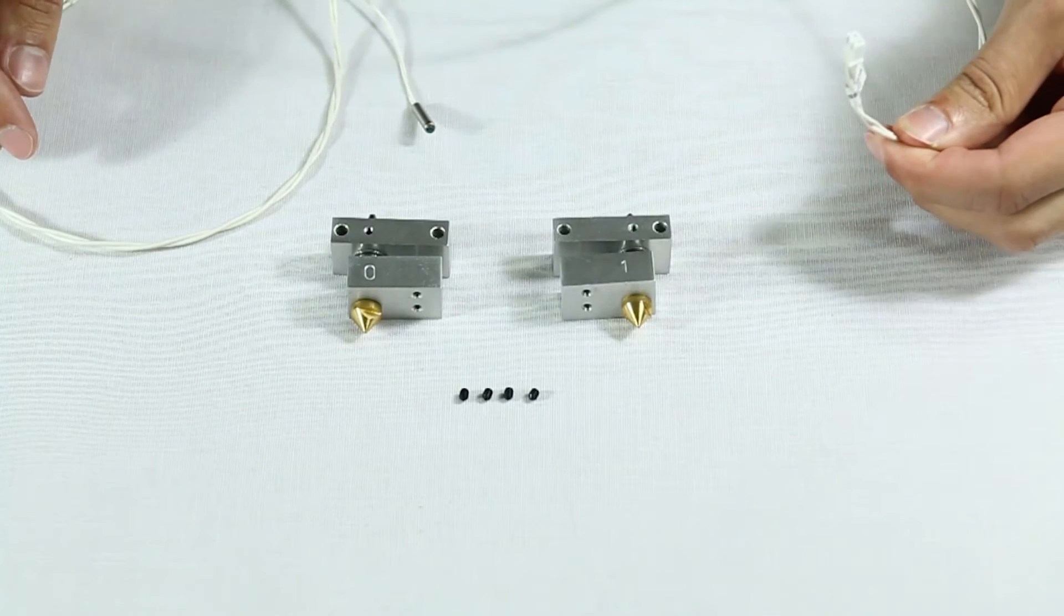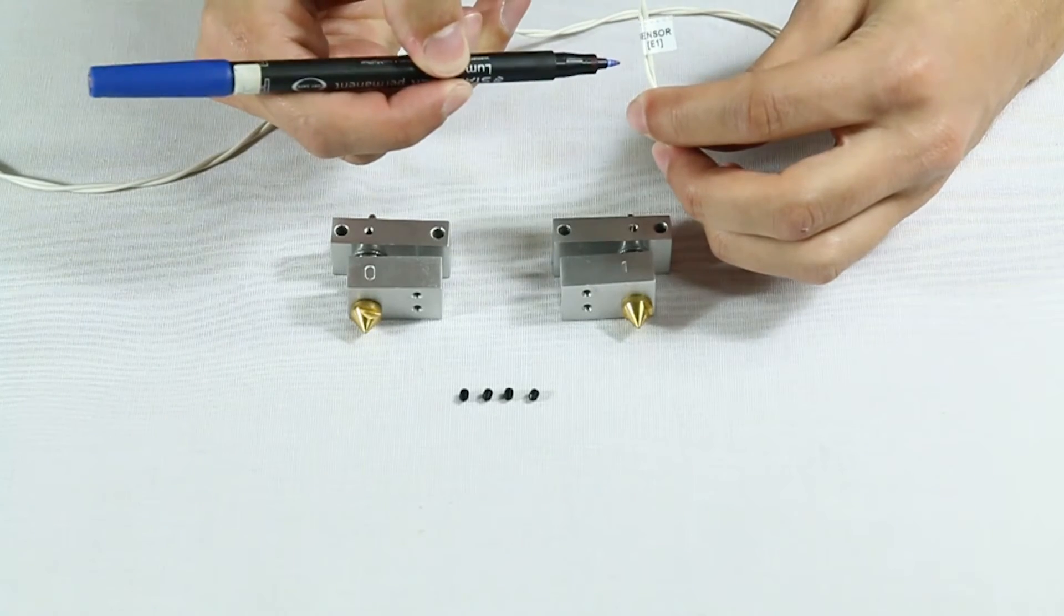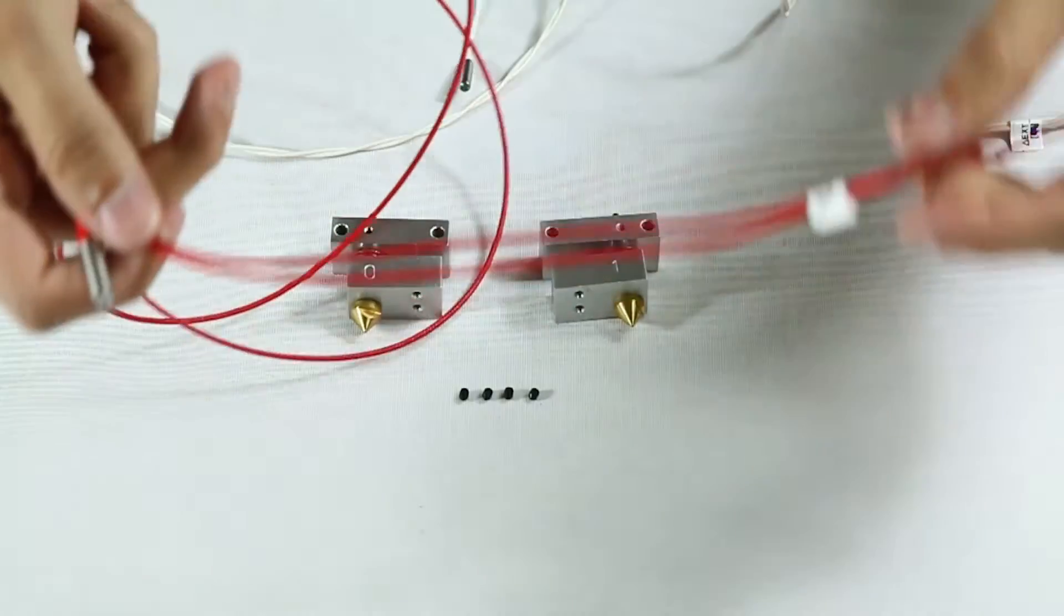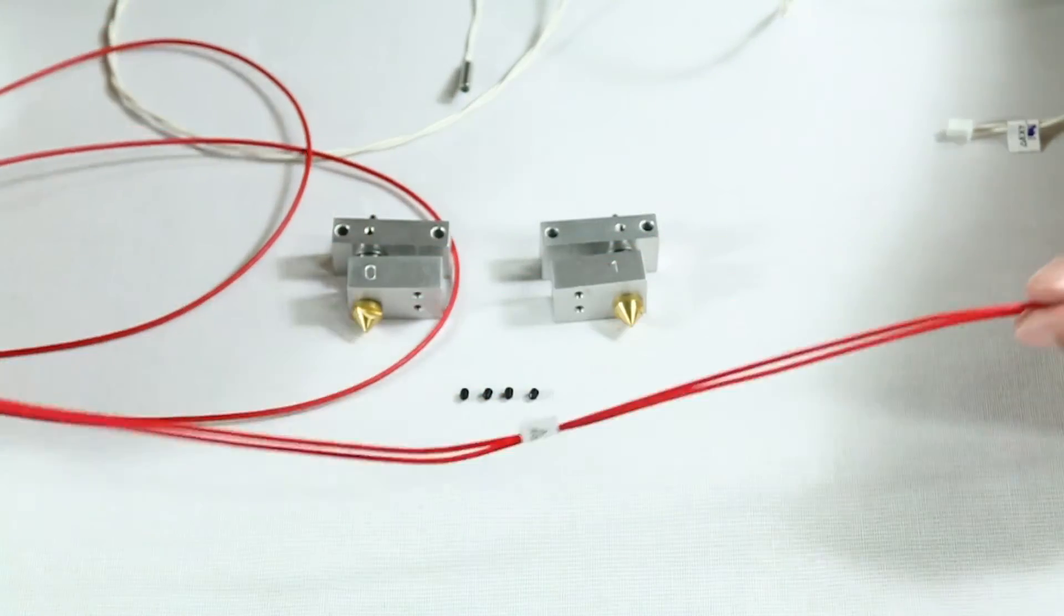Next, it's the temperature sensors. Unravel them, and very importantly, mark on the labels whether they are to be connected to the 0 extruder or 1 extruder. Do the same for the heat cartridges.